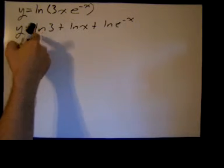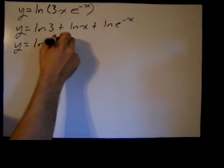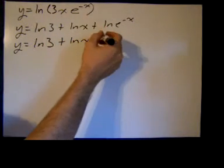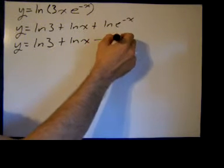Now when I take a derivative, that's just going to be 0. But anyway, one more thing I want to do here is bring that power of negative x down in front of the logarithm.